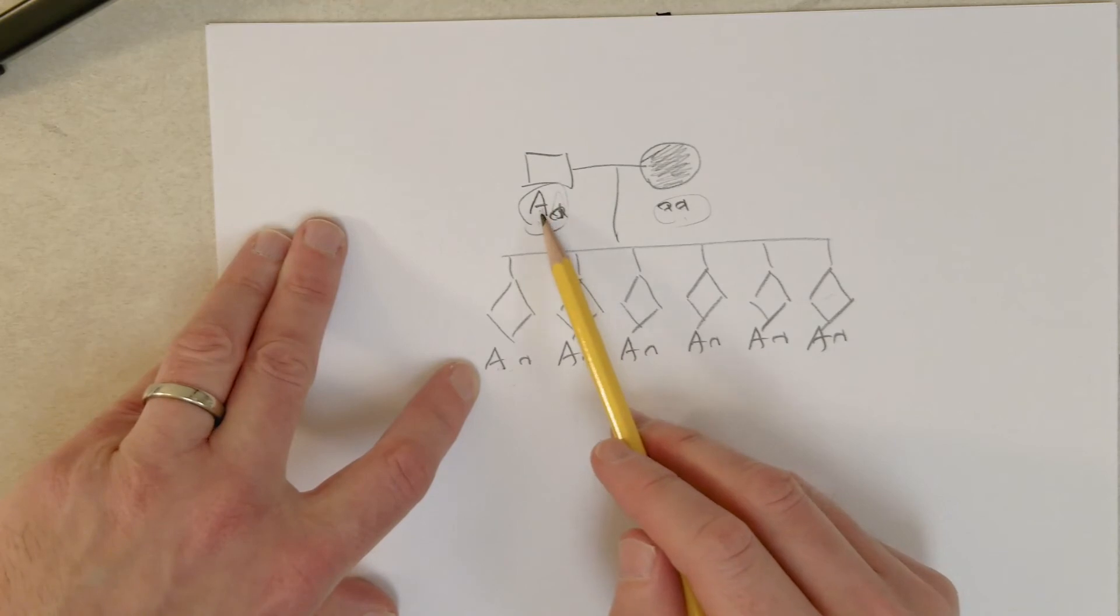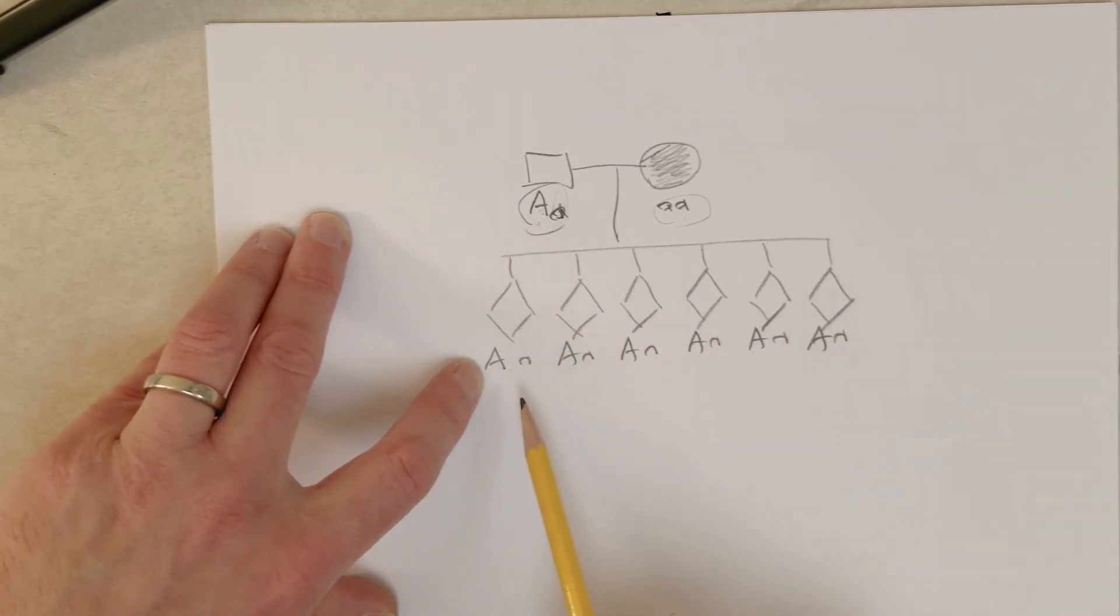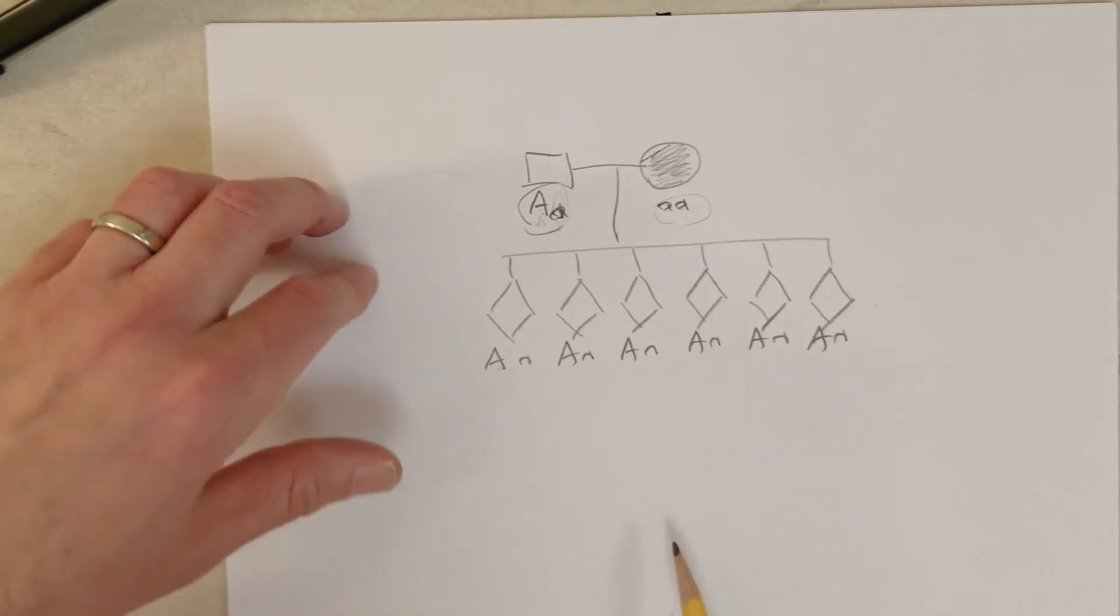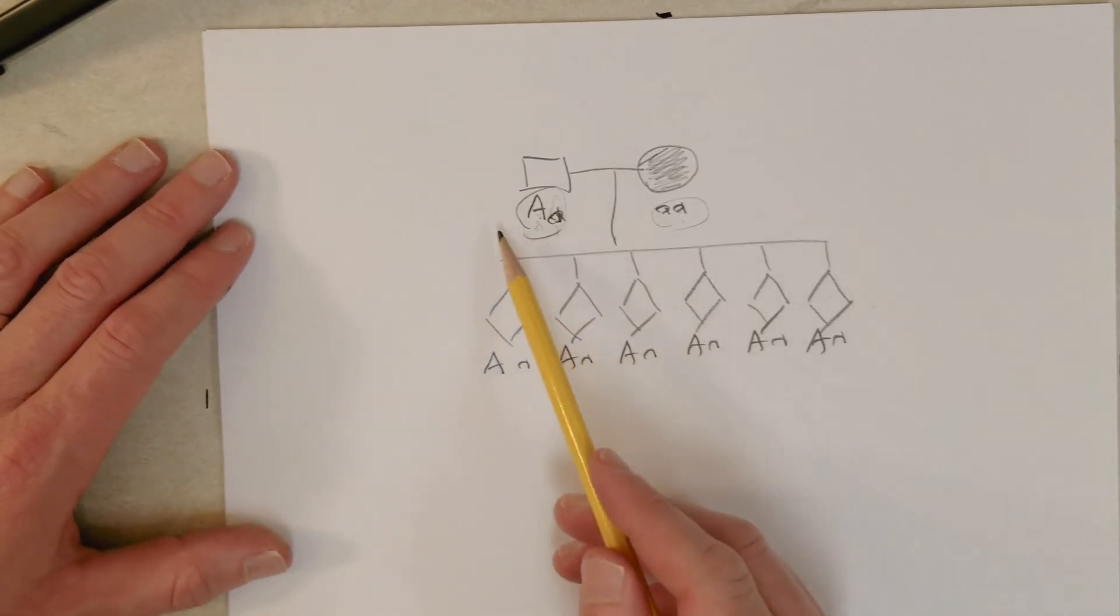But there is a chance that the dad had a big A and a little a and just by random chance the children happen to get the big A from the dad each time. And the likelihood of the dad being heterozygous here decreases with every child that is born that does not have albinism.